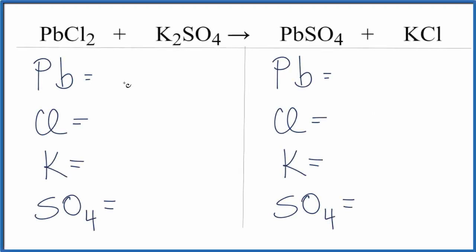In this double displacement reaction, we have PbCl2 and K2SO4 combining. And essentially the Pb, the lead and the potassium, they're going to switch places.